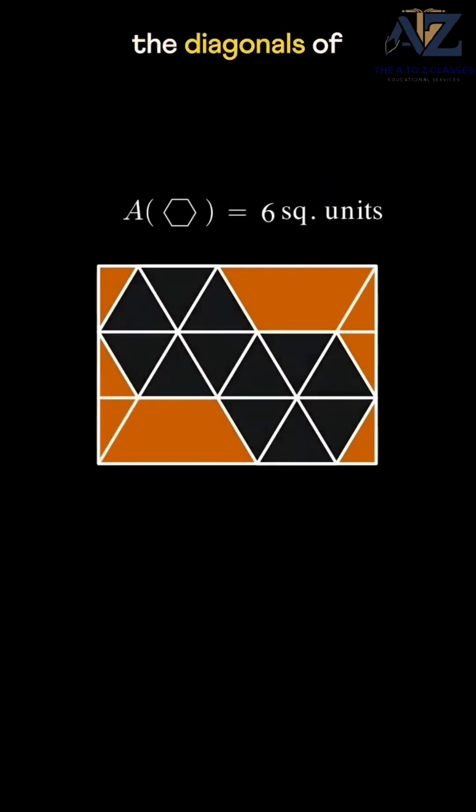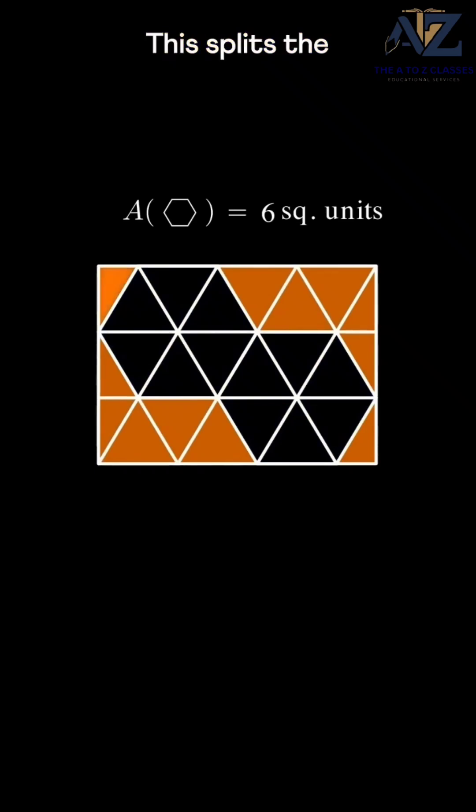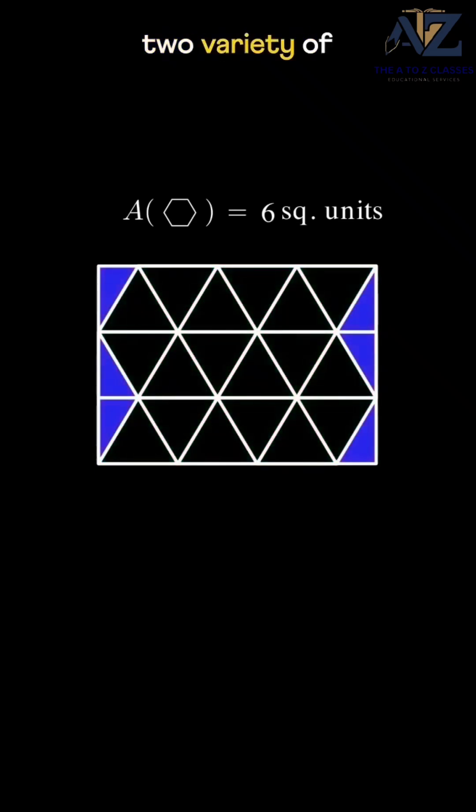Draw lines along the diagonals of both hexagons and their sides. This splits the rectangle into these two variety of triangles.